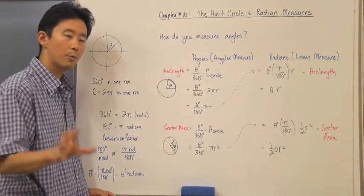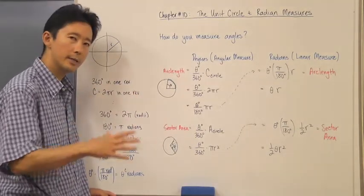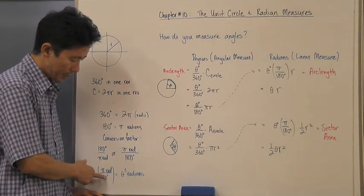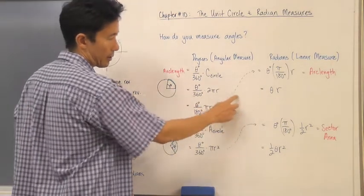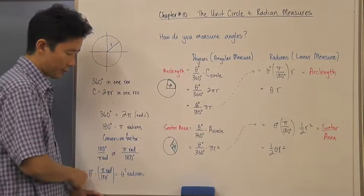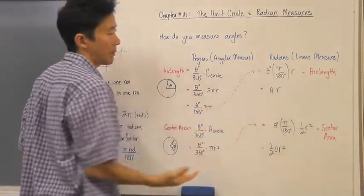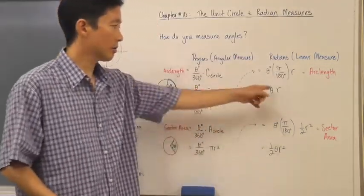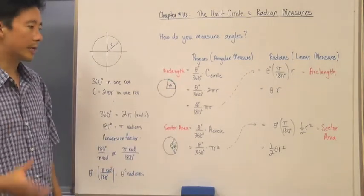Now we want to look at what the radian representation means for calculating arc length and sector area using radians instead of degrees. Notice that if you have theta degrees and multiply by pi over 180 degrees, you get a radian measure. So if I take that conversion factor and substitute it in, the theta times pi over 180 becomes a radian measure. That means if your angle is in radians and you know the radius, calculating arc length is very easy: it's just theta in radians times the radius.